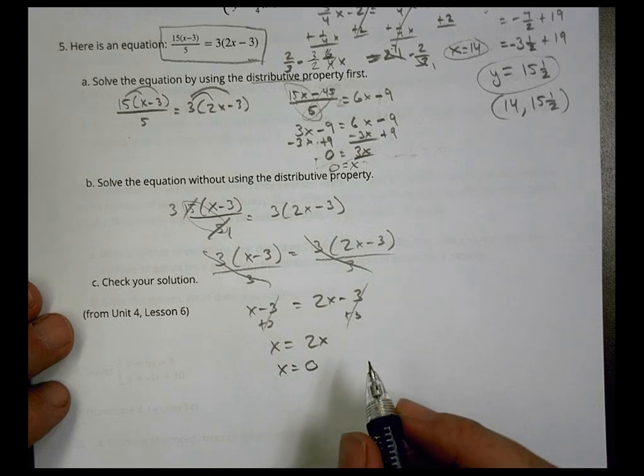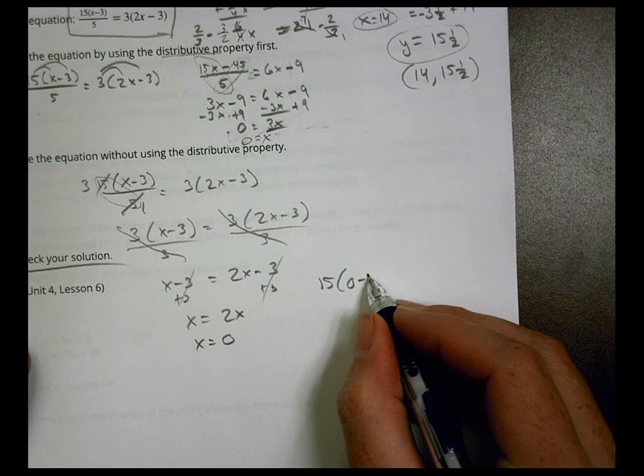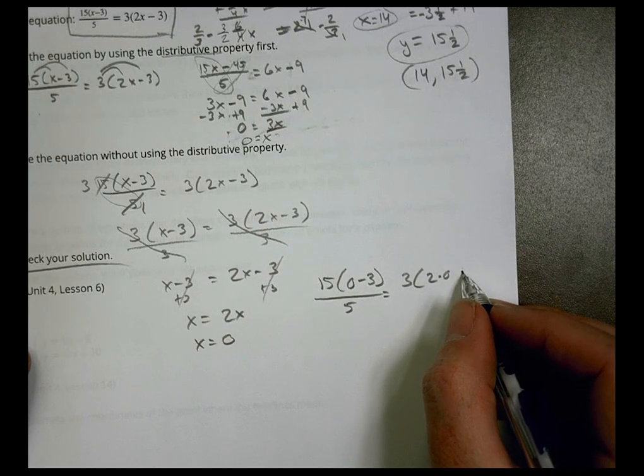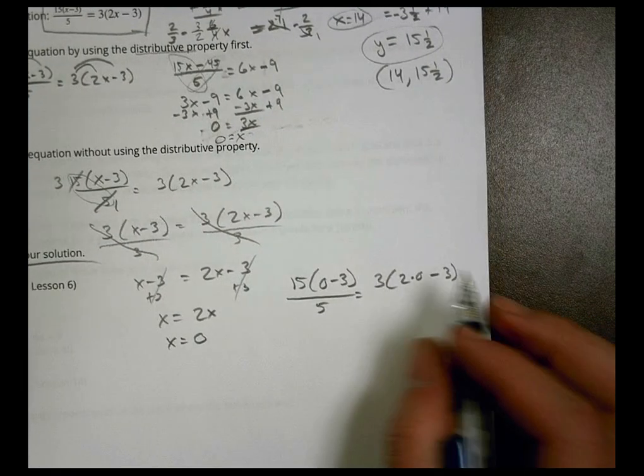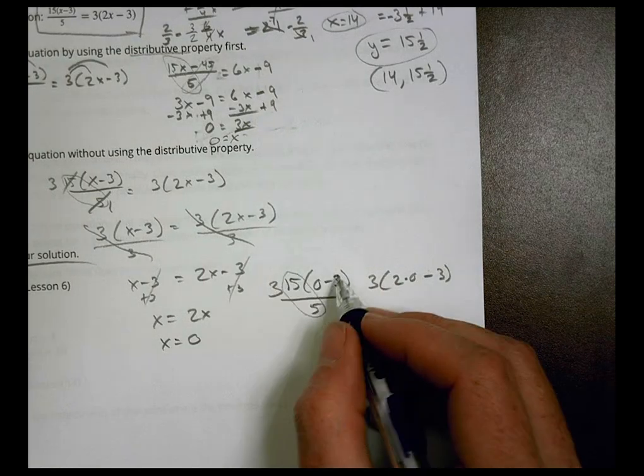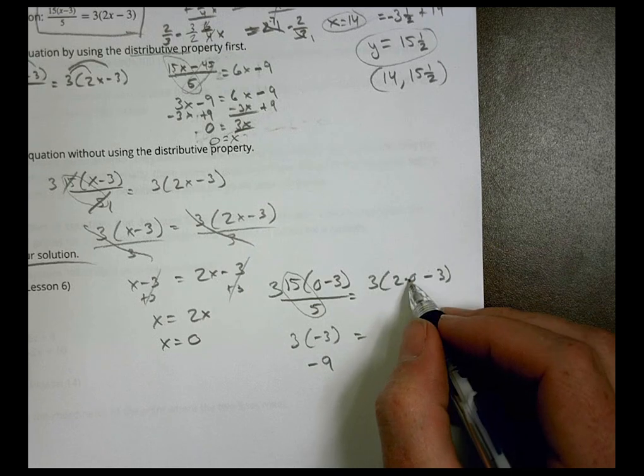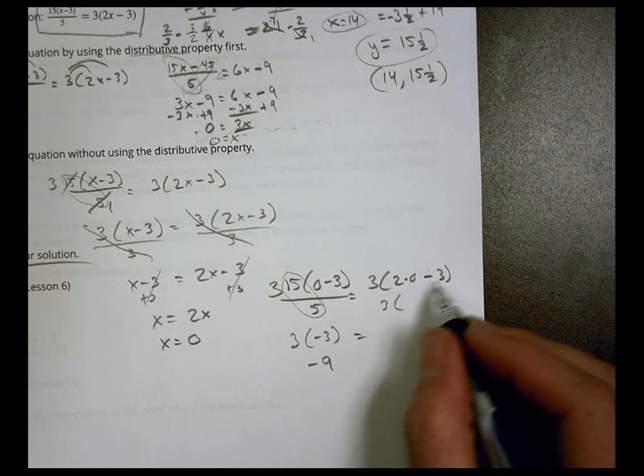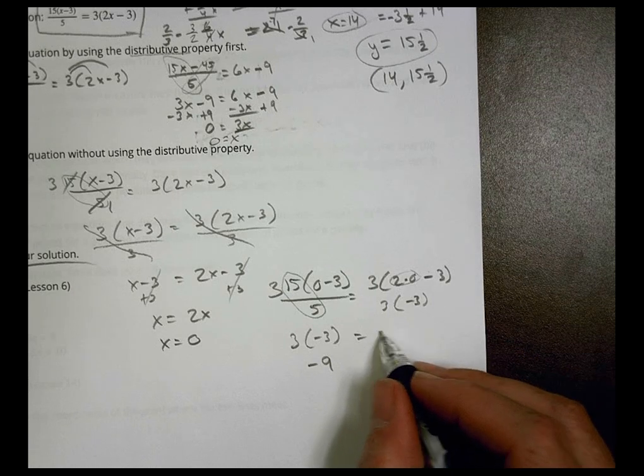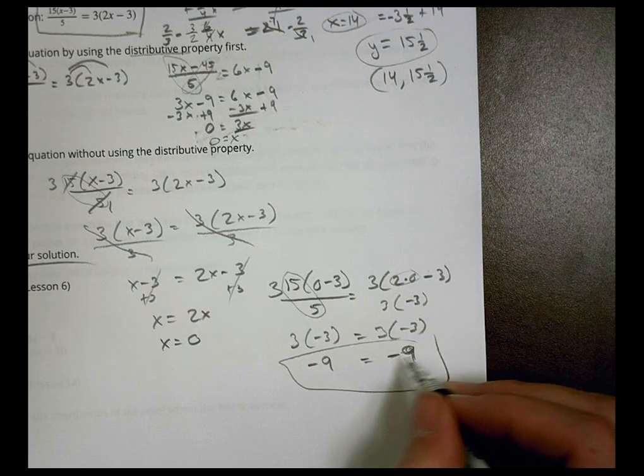So now we've got to check it out to see if it actually does work. That's our check our solution part here. So let's plug it in. 15(0 - 3) over 5 equals 3(2 times 0 - 3). We'll see if this works. So this is 15, well I can still reduce here. That becomes 3. So now 3 times negative 3 is negative 9. And this is 0 minus 3, which is still going to be 3 times negative 3, which is still equal to negative 9. So indeed, those equal each other, so it works out just fine.